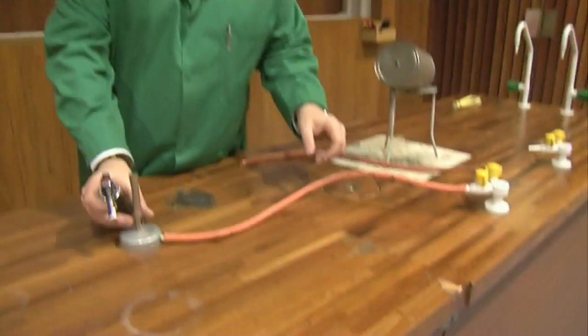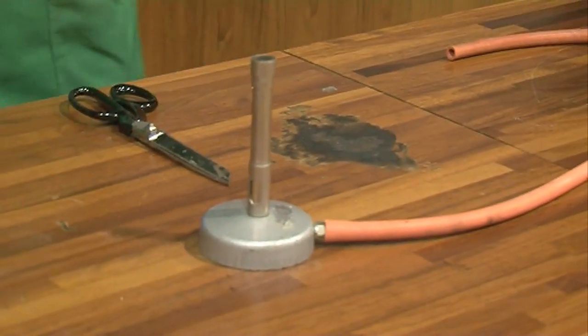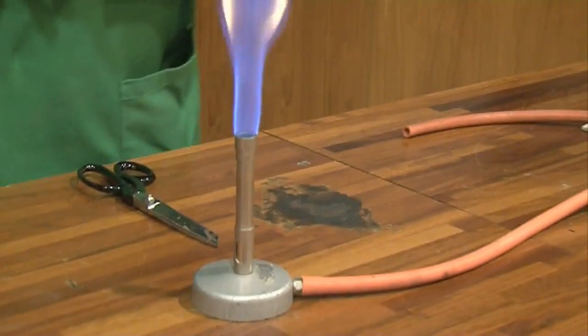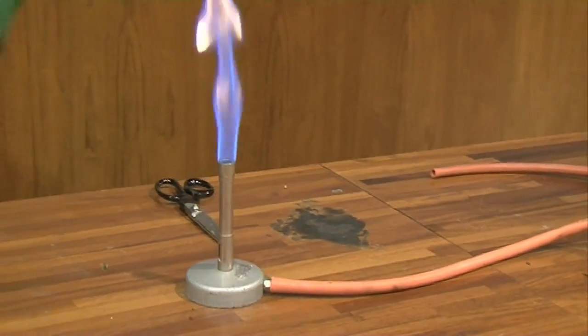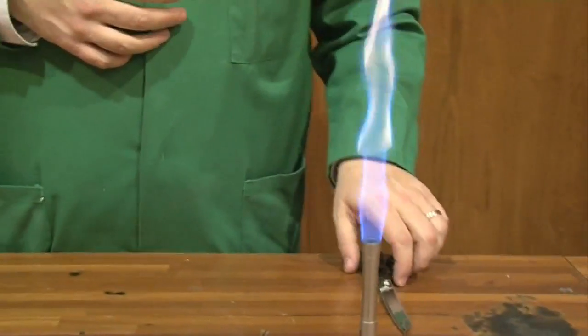So let's show you the combustion of methane. So simple combustion. We're going to use a Bunsen burner. I just need to light it. So you can see the methane is burning quite nicely in the atmospheric air and you're getting this rather nice incandescent flame.